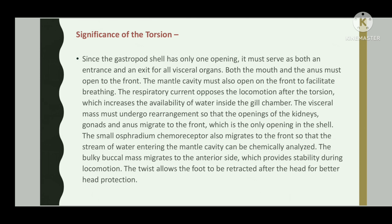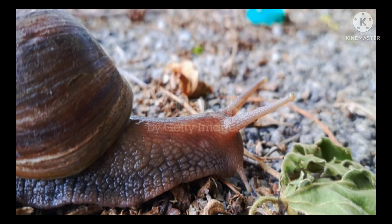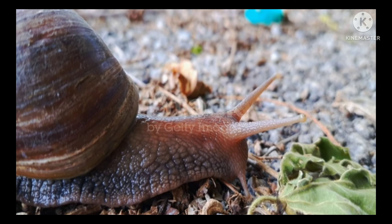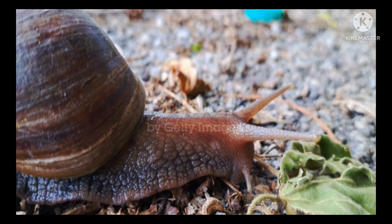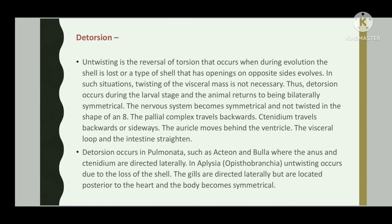Detorsion: detorsion, or untwisting, is the reversal of torsion that occurs during evolution when the shell is lost, or a type of shell that has openings on opposite sides evolves. In such a situation, twisting of the visceral mass is not necessary, and thus detorsion occurs during the larval stage.